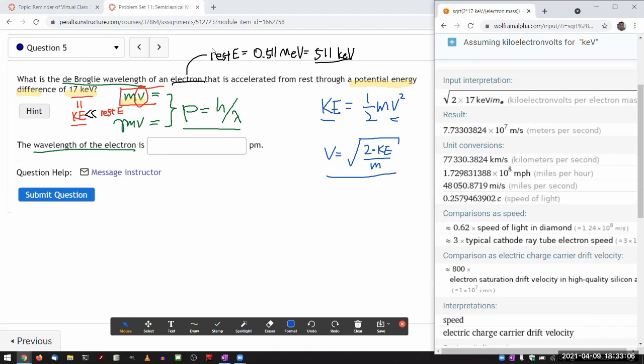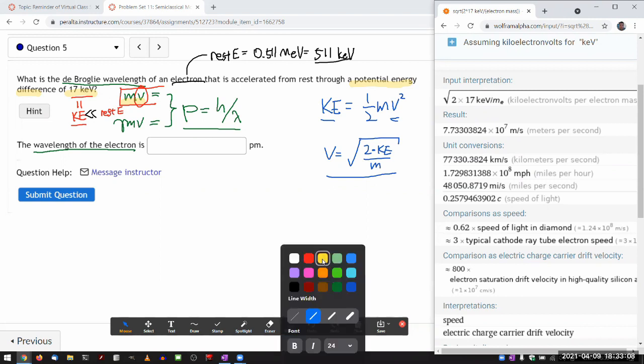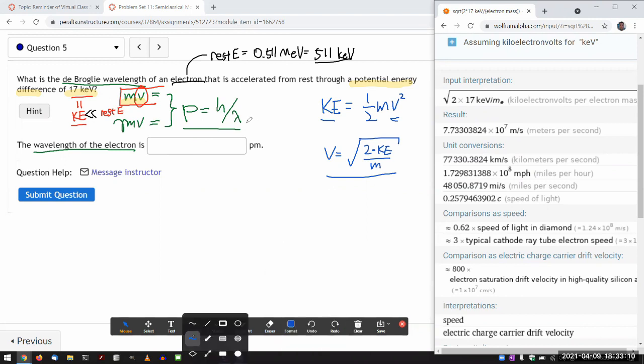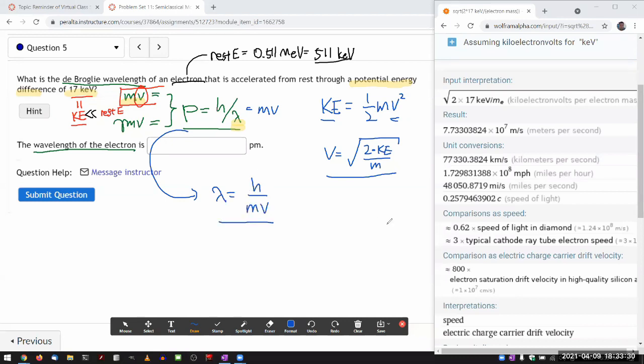So we are here, so to get at the wavelength, I need to say that this equals mv, and I'm solving for wavelength, and do that algebra, wavelength is equal to h over mv.